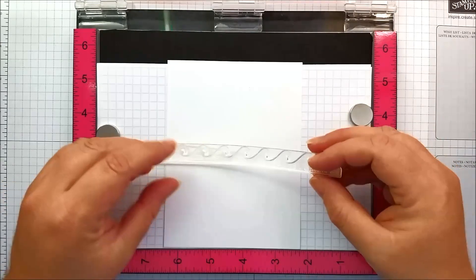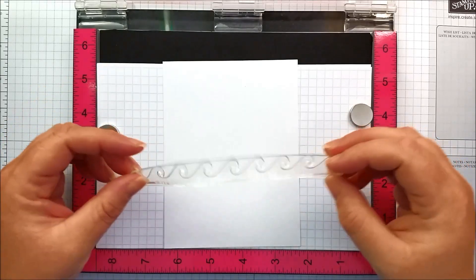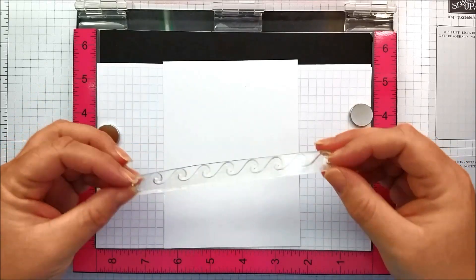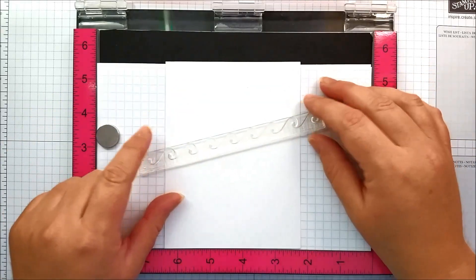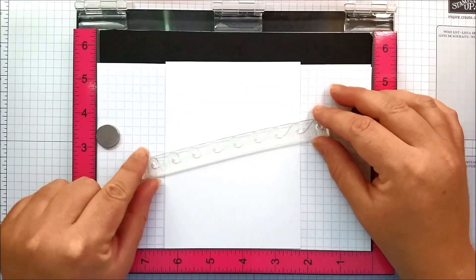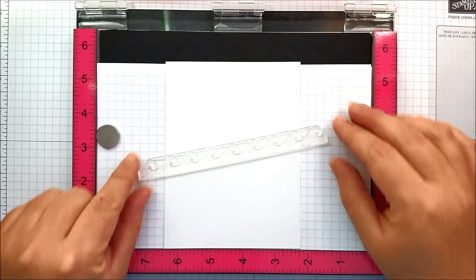What's nice about acrylic stamps is that you can actually bend them, which is kind of cool. Now because I'm going to play on a flat surface we're not going to bend them, but you could arch this wave.